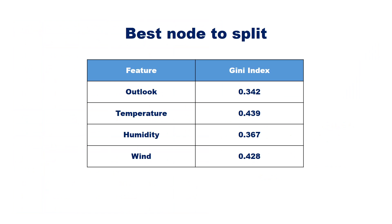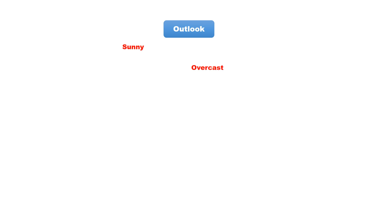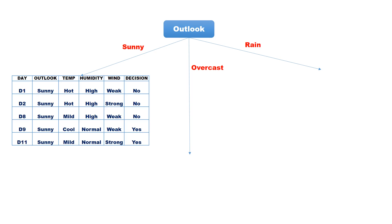Here is the Gini index for all four attributes. The lower the Gini index, the higher the purity of the split. Outlook has the lowest Gini index; hence Outlook is the best attribute to be chosen as the root node. Outlook has three values — sunny, overcast, and rain — so the root node has three branches. We split the data based on the values of attribute Outlook: five records have value sunny, four records have value overcast, and five records have value rain.